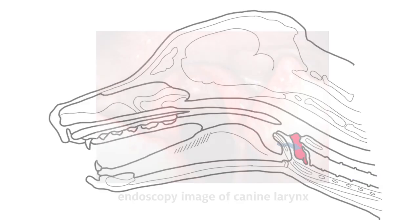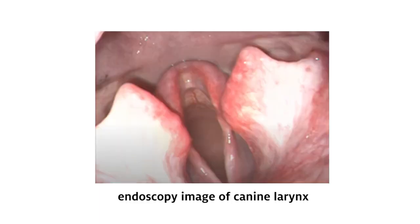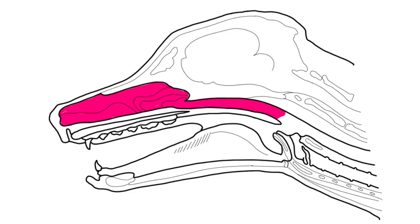During inhalation, muscles in the larynx will open the cartilages to produce a nice round opening for the air to enter. If the larynx is not functioning properly, the animal will have difficulty inhaling and thermoregulating. These areas of the respiratory tract, including the nasal passage, nasopharynx, pharynx, and larynx, are commonly referred to as the upper airways.